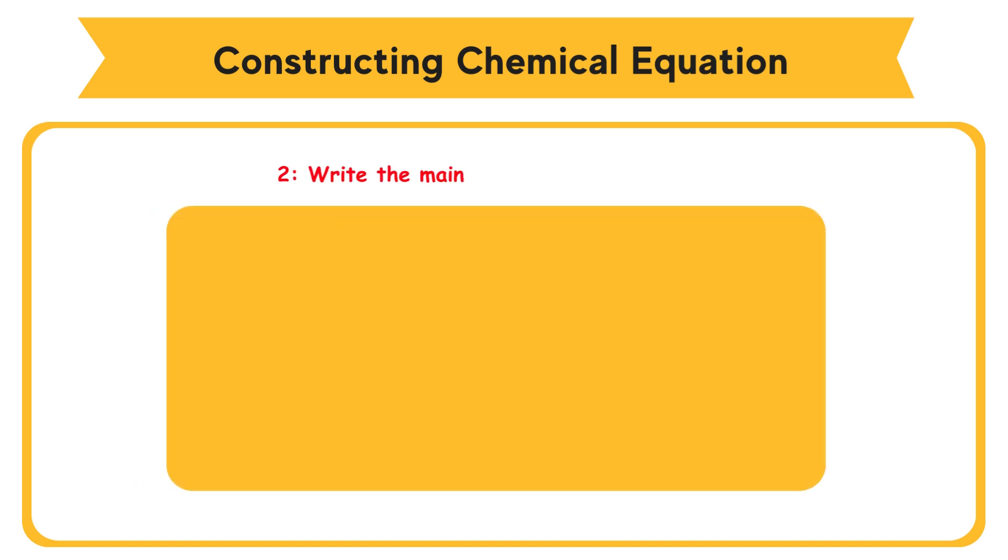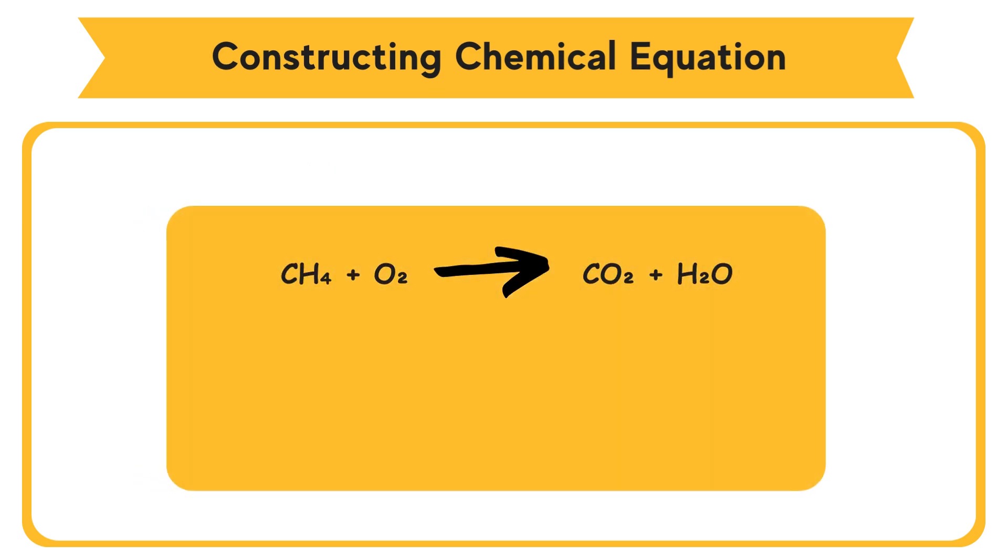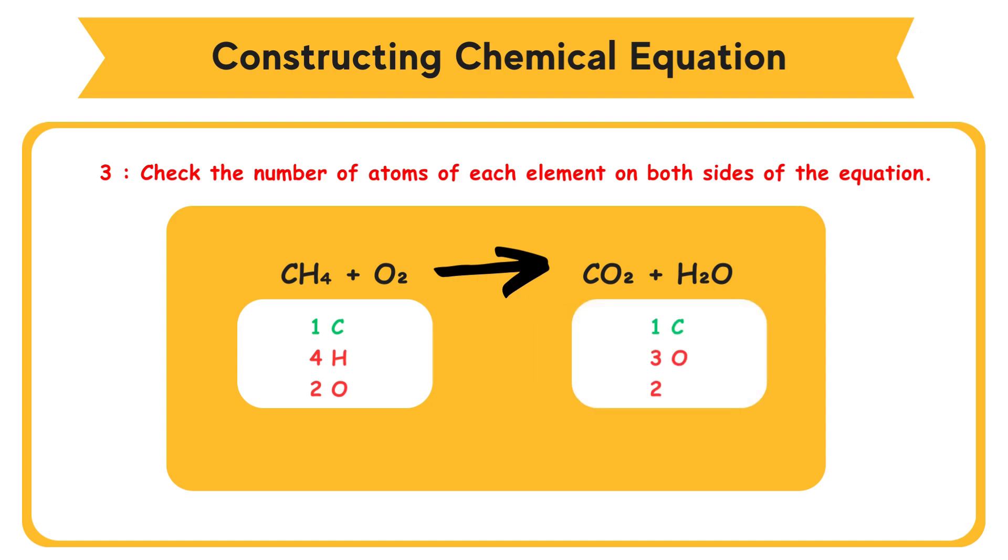Step 2: Write the main part of the equation. CH4 plus O2 reacts to produce CO2 plus H2O. Step 3: Check the number of atoms of each element on both sides of the equation. Left-hand side: 1 carbon atom, 4 hydrogen atoms, 2 oxygen atoms. The numbers of atoms are not balanced.